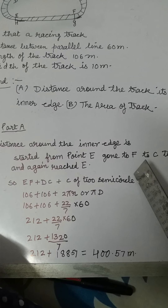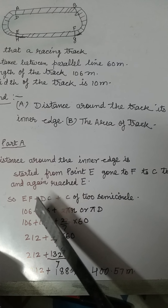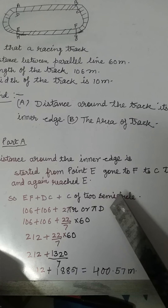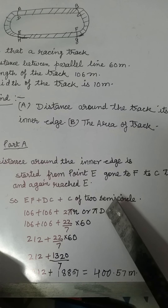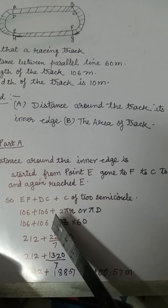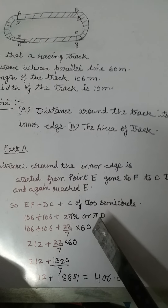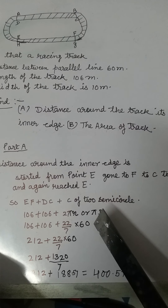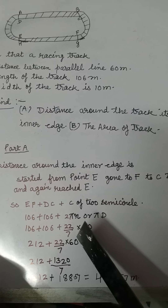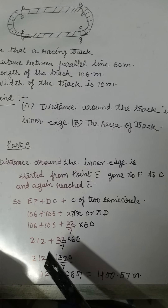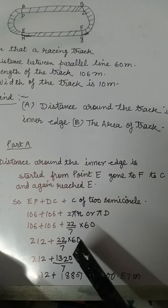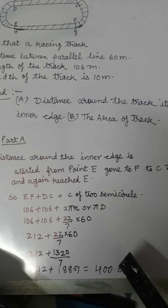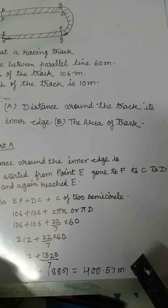The distance around the inner edge equals EF plus DC plus the circumference of the two semicircles. EF and DC are each 106 meters. The circumference of two semicircles equals 2πr, or πd. So the total is 106 plus 106 plus 22/7 × 60, where 60 is the diameter — the distance between the two inner edges. That gives 212 plus 188.57, which equals approximately 457 meters.